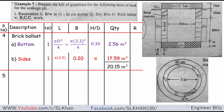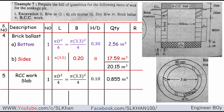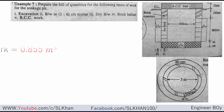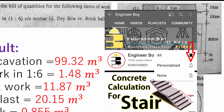Item number five is the RCC work, which is the last item — it is the slab. The area is the same as the brick ballast at the bottom: pi times 3.3 squared divided by 4. The thickness is 10 cm (0.1 m). Multiplying gives the RCC work quantity of 0.855 cubic meters. That's the final result. If you like these types of videos, please hit the subscribe button and press the bell icon so you never miss an update from Engineer Boy.